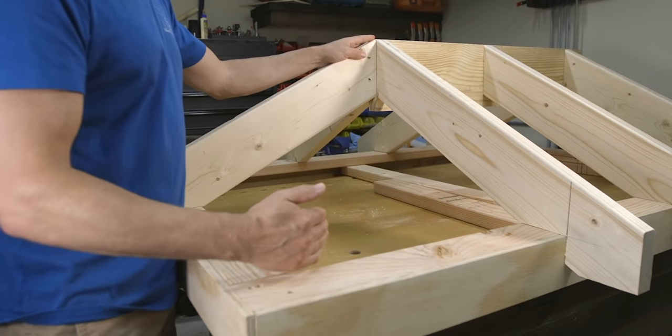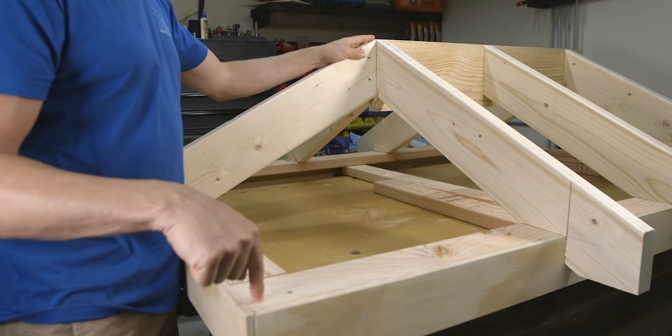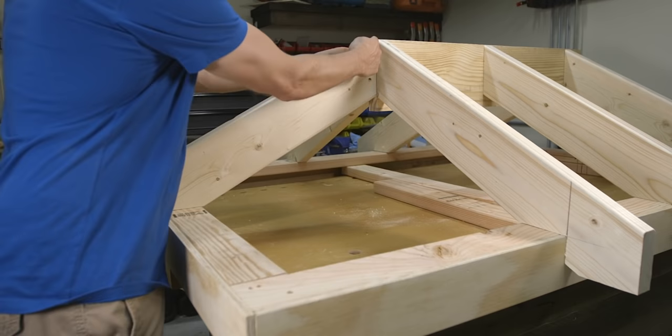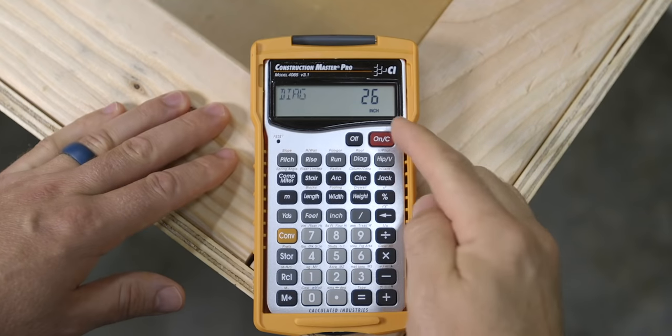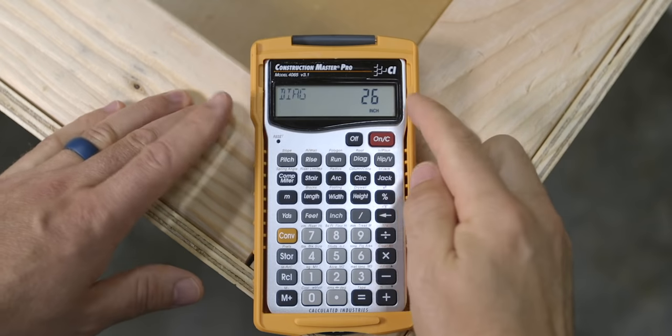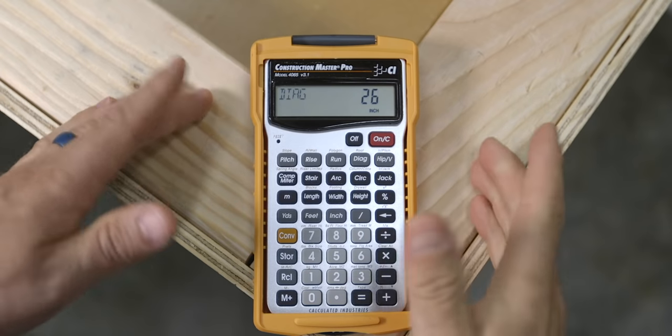Moving on, let's start working on the hip rafters, which go from the bottom corner here all the way up to the ridge. If we look back at our calculator, you can see that it's still showing our common rafter length of 26 inches.